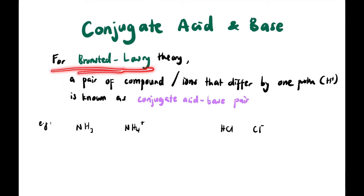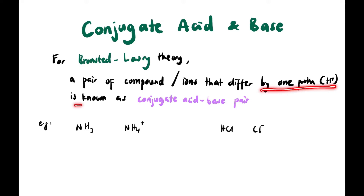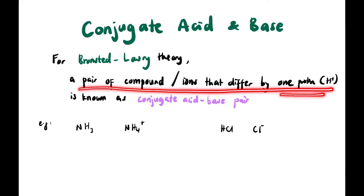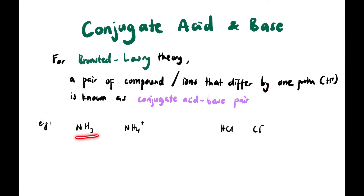Looking more deeply at Bronsted-Lowry theory: a pair of compounds or ions that differ by one proton are called a conjugate acid-base pair. For example, NH₃ and NH₄⁺ — NH₃ has one fewer H⁺ than NH₄⁺, so NH₃ is the base and NH₄⁺ is its conjugate acid. Similarly, HCl is the acid and Cl⁻ is its conjugate base.